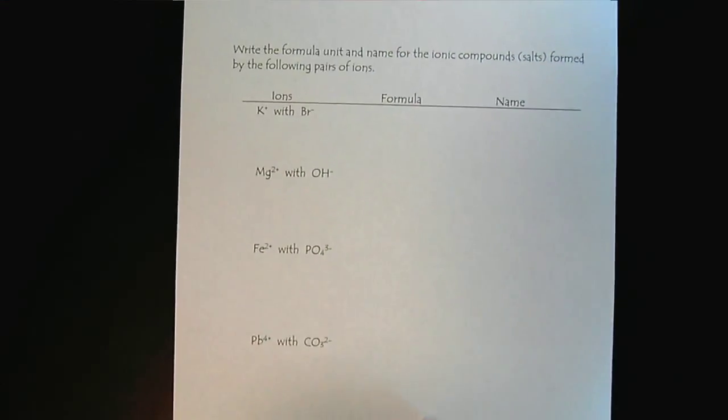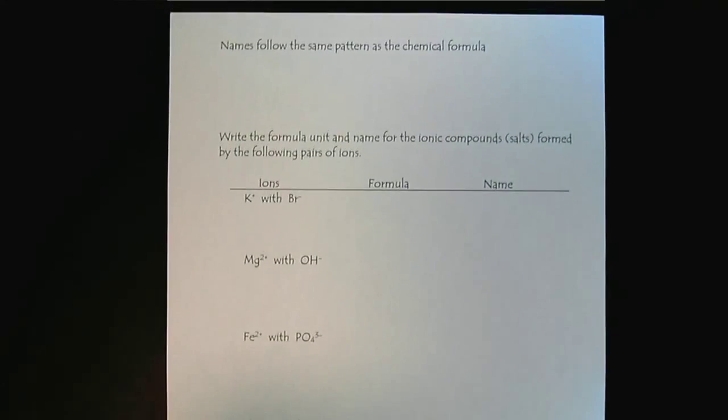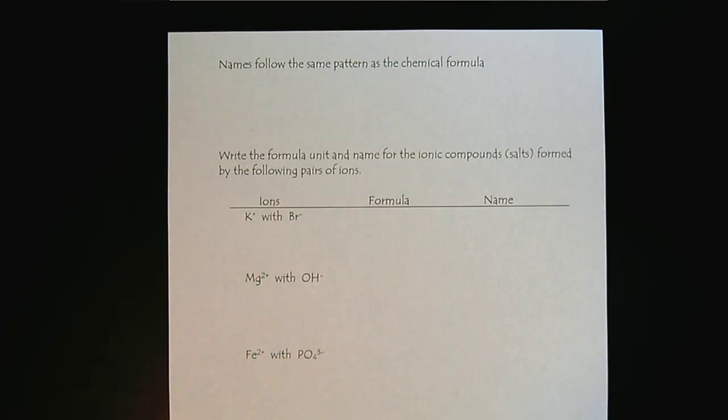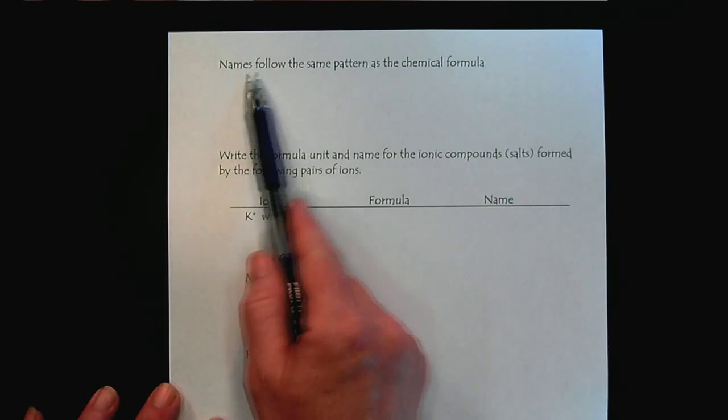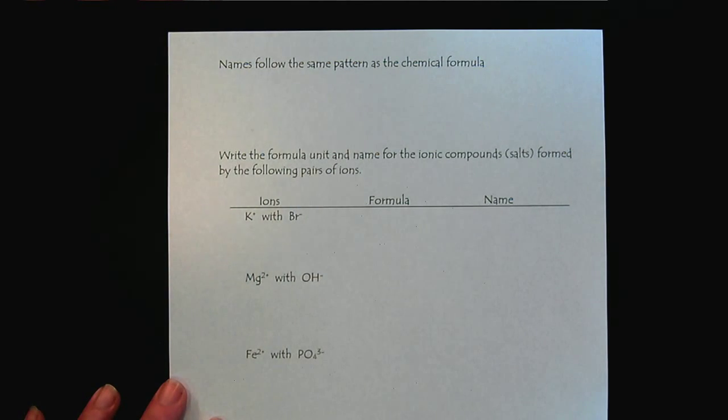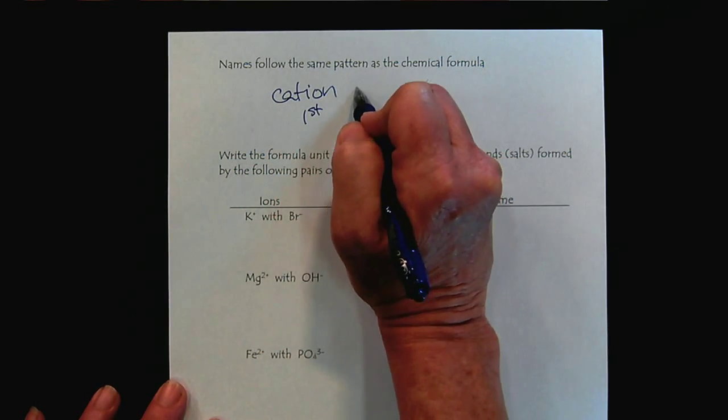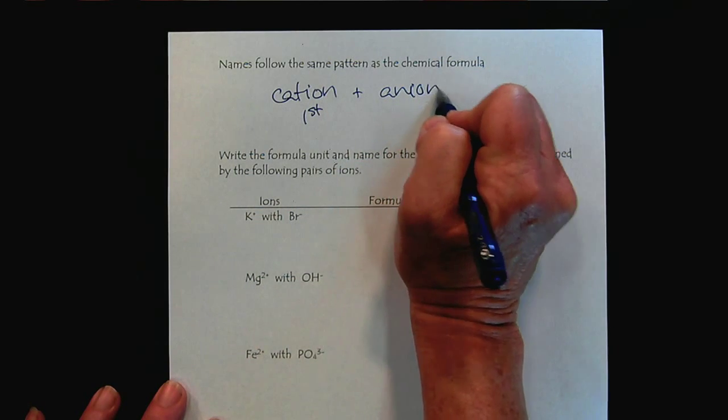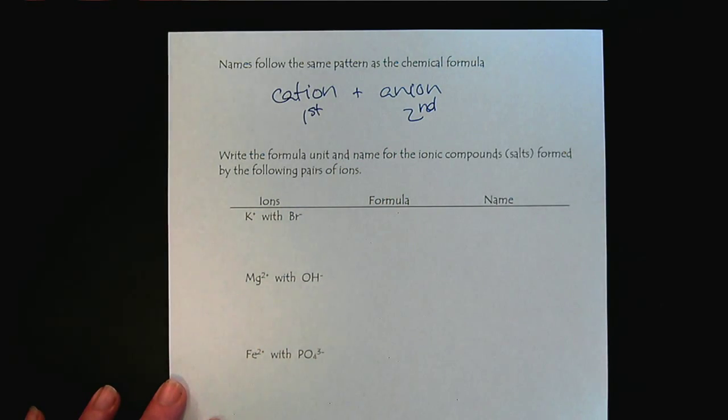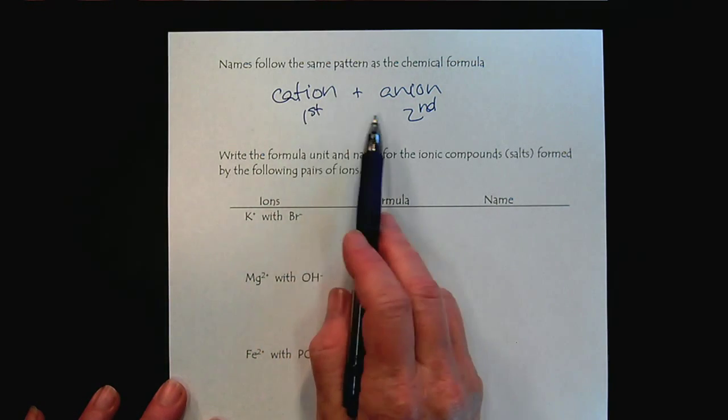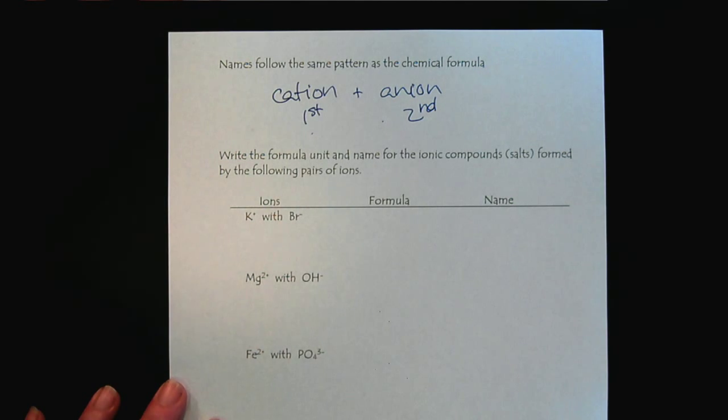Now, the useful thing or helpful thing about ionic compounds is naming follows the same pattern as the chemical formula. We are always going to have the cation first, followed by the anion, which is second. And the names are a bit of a puzzle. All we need to know is which ions are present. And then it's a puzzle that we can figure out the ratio to create the neutral compound. So let's practice this skill together.